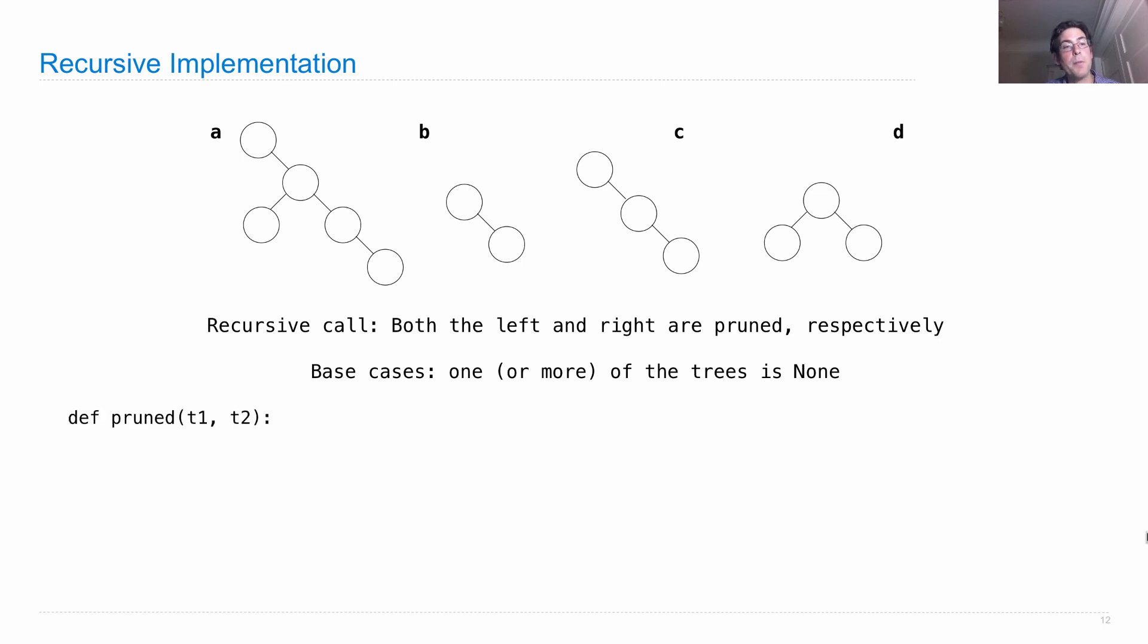So if T2 is a pruned version of T1, well, one base case is that T2 is none, which means it has no paths, which means T1 must contain all of those paths. So it is true. If T1 is none and T2 is not, well, then in that case there is some path in T2, but it can't possibly be contained in T1 because T1 is none. So we return false.